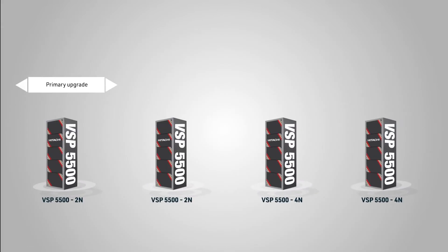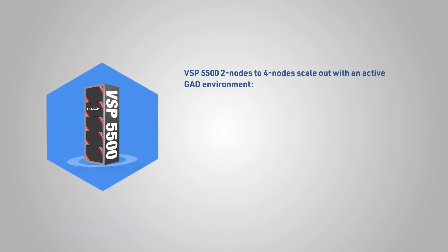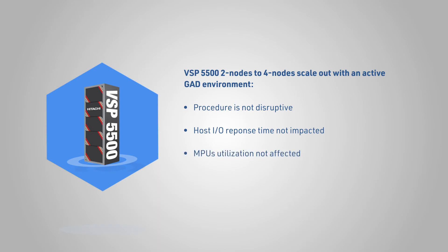The entire process included a scale-out of primary and secondary storage systems, followed by a rebalance of the MPUs. This procedure was non-disruptive. In summary, the VSP5500 two-node to four-node scale-out procedure with a GAD setup actively replicating data showed that the procedure is non-disruptive, post-IO response time is not impacted, MPU utilization is not affected, and GAD pairs remain active in pair-state replicating data. This completes the GAD scale-out case.